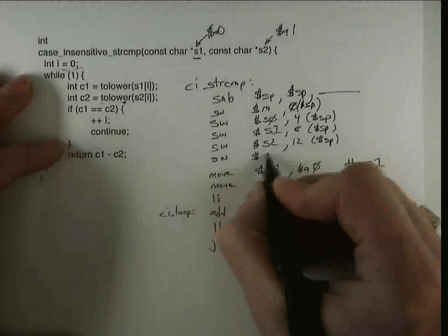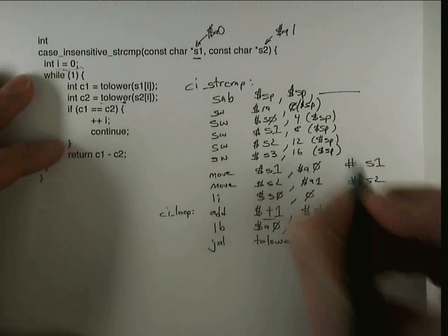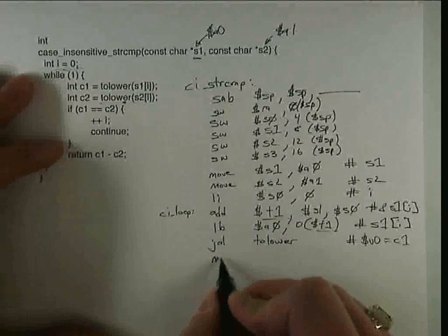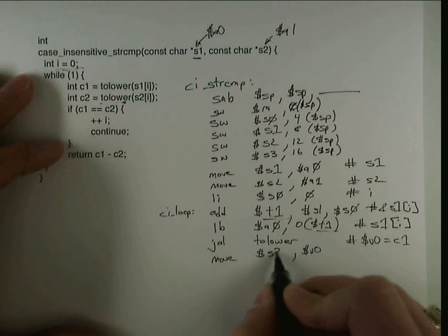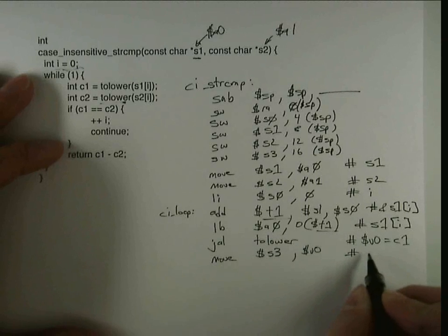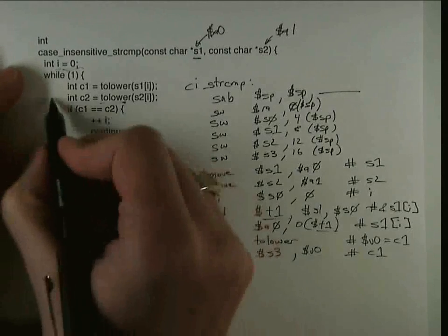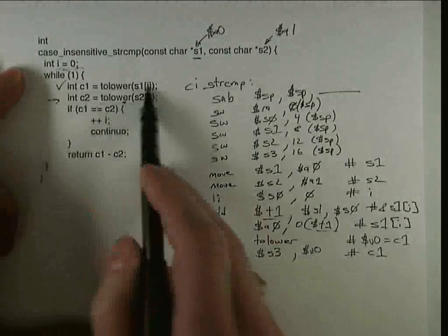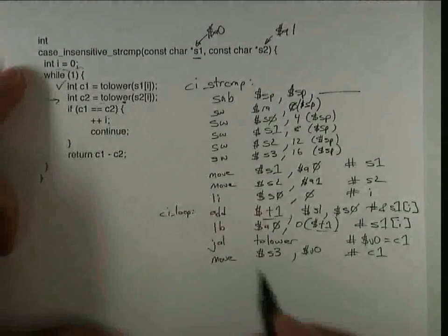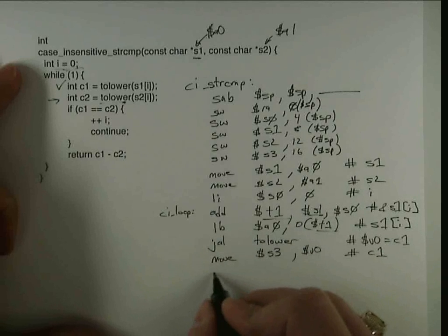And I'm going to move v0 into s3. So this is going to now hold c1. So now I'm ready to, I've completely handled the first statement here. I'm going to handle the second call, and basically it's going to be the same thing, except for loading s1, I'm going to use s2.